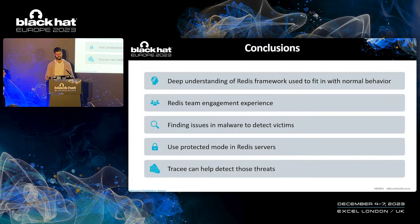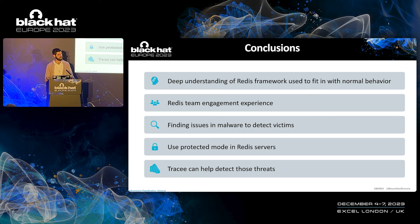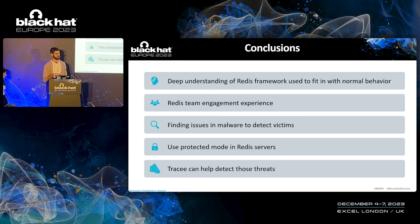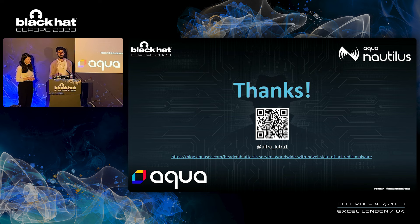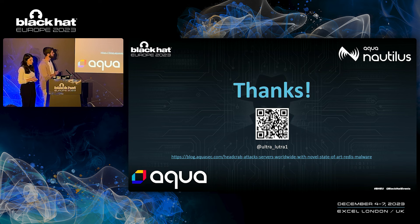This was a long and technical session. Let's see our conclusions. HeadCrab is a sophisticated attacker with a deep understanding of the Redis framework, using it to fit in with the normal behavior of the Redis server in order to stay hidden. We were able to interact with the Redis team after publishing our first blog and present the attack to find ways to prevent those kinds of attacks in newer versions. We were also able to find issues in the malware to detect victims, as we've seen in both cases. Two tips before we part: if you're using Redis servers, use protected mode, and Tracee — like other runtime solutions — can help you detect those advanced threats. Thank you everyone.